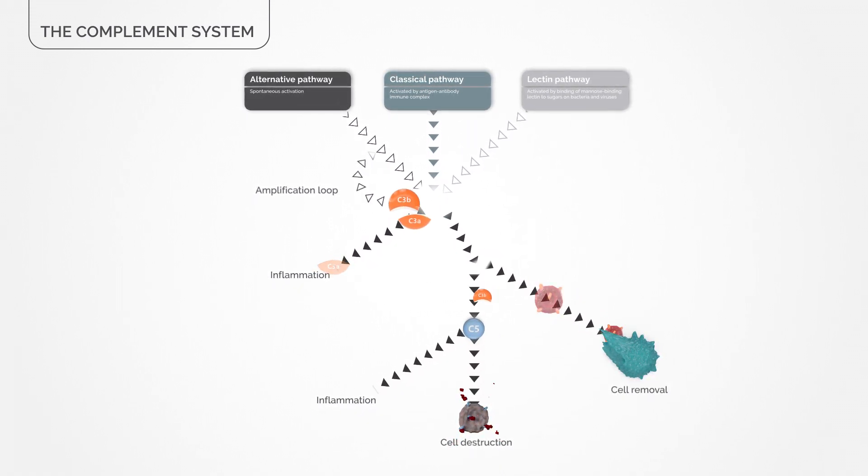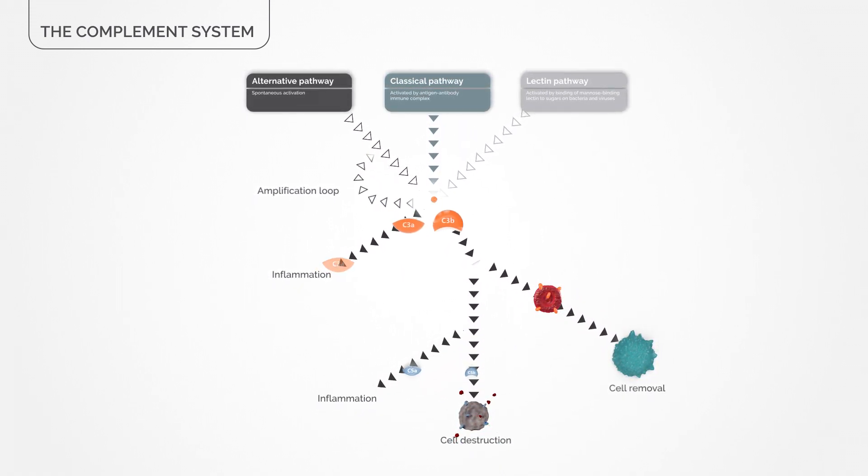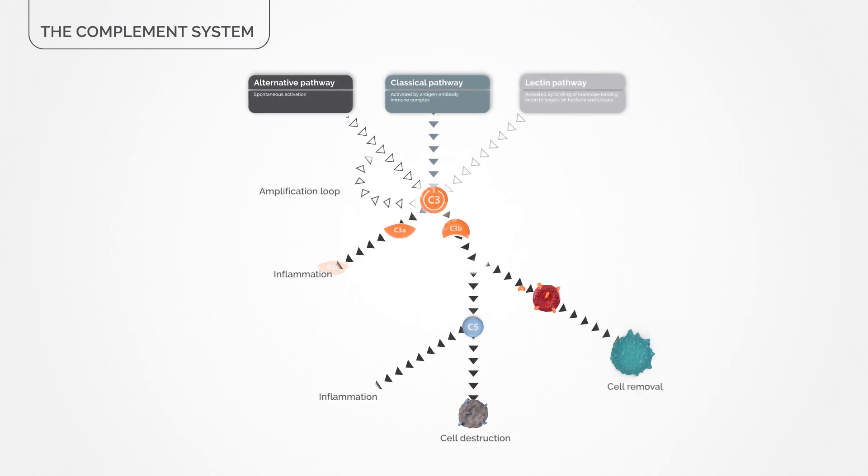C3 serves as the master switch, controlling all downstream effectors that ultimately cause destruction of the cell.